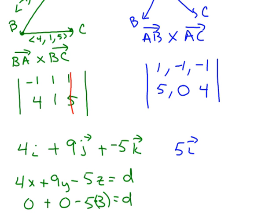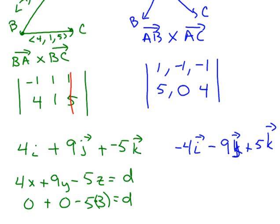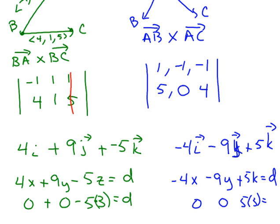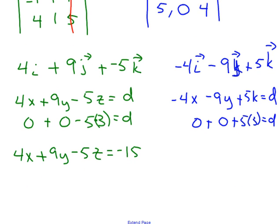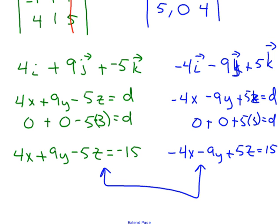Continuing the cross product: the j component is the opposite of (4 − (−5)), which is negative 9j. And the k component is 0 − (−5) = 5k. So the normal vector is ⟨−4, −9, 5⟩. Using point A (0, 0, 3), d = 15. The equation is −4x − 9y + 5z = 15, which is equivalent to the first equation — it's just a multiple of negative one of the other.